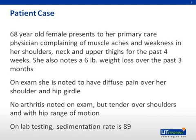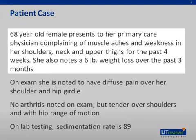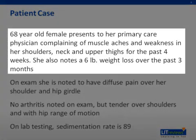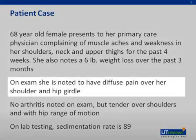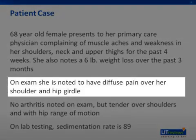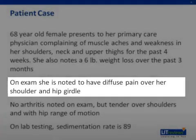First, let's start with a case. A 68-year-old female presents at your clinic complaining of muscle aches and weakness in her shoulders, neck, and upper thighs for the past four weeks. In addition, she tells you that she has had about a six-pound weight loss over the past three months. When you examine her, she has diffuse pain and tenderness over her shoulders and hips.